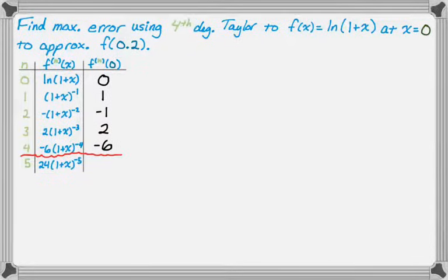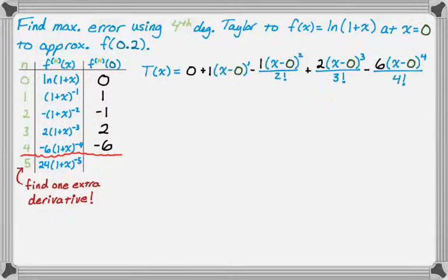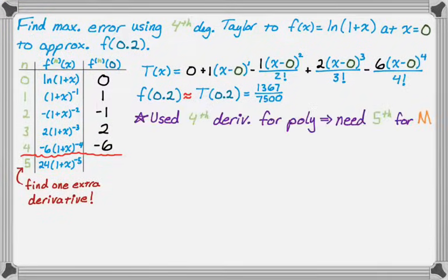When I do these, I always make a table with n as one column, the nth derivatives as another column, and the nth derivatives at the center as another column. For the fourth degree polynomial I need four derivatives, but I added an extra row — you always want to go one extra derivative when dealing with error, because you'll need that to figure out what M is. Then I wrote the polynomial. I'm approximating f of 0.2, so f of 0.2 is approximately t of 0.2. Using a calculator, t of 0.2 is 1,367 over 7,500. I need the fifth derivative to figure out what M is.